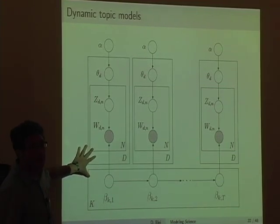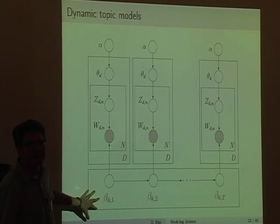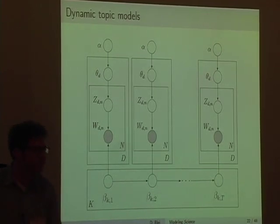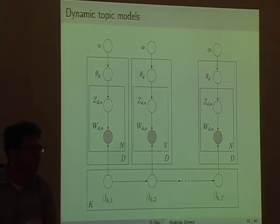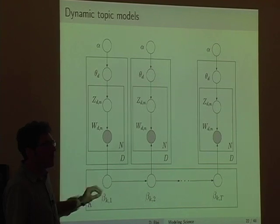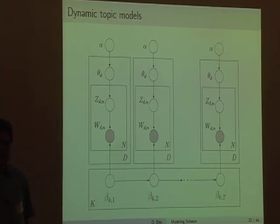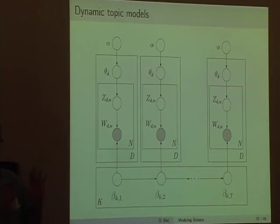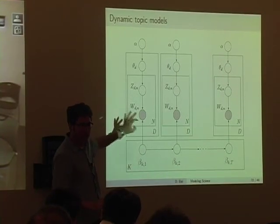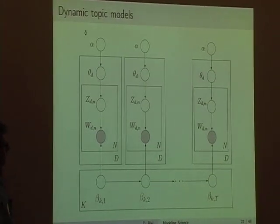That is a limitation of this model — you assume there are K topics that somehow existed in 1890 but nobody started talking about them until later. It's also theoretically possible for one topic to mutate into another topic over time, though we didn't see it. This is the simplest possible dynamic topic model: just K topics, each one evolving separately over time, with no structure between topics like chemistry and physics, since we don't know anything about that in advance.